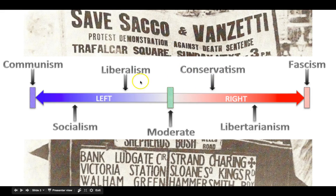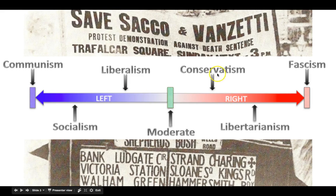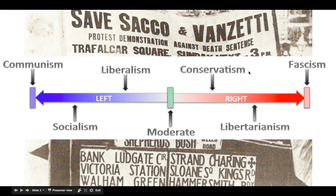Being somewhere on the political spectrum is totally expected — everybody falls somewhere. During the 1920s in the United States, conservatism — being on the right end of this spectrum — meant believing that your social life should be more controlled by your community rather than the government, and that your economic life should not be controlled by the government. That's what we're looking at here in the 1920s: a return to conservatism in this country.